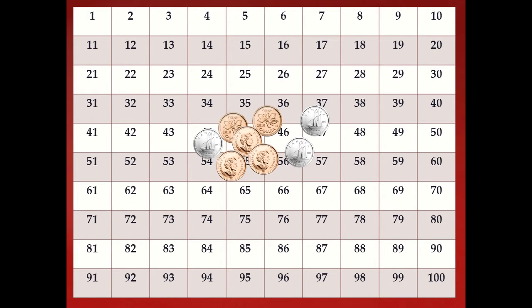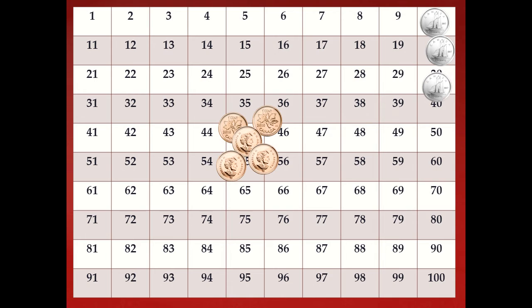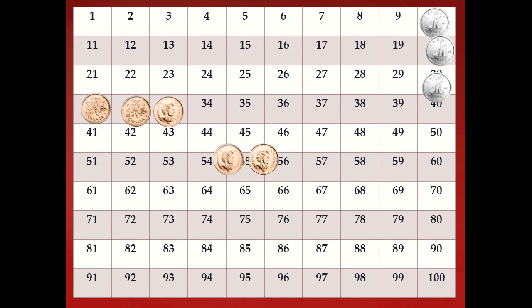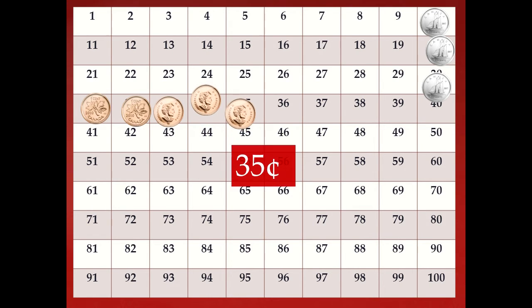Now I have a group of money here. Let's count those together. When we're counting dimes, don't forget, we're going to count by ten. When we're counting pennies, we're going to be counting by one. Would you count with me, please? Ten, twenty, thirty, thirty-one, thirty-two, thirty-three, thirty-four, and thirty-five. This is thirty-five cents. Good job!